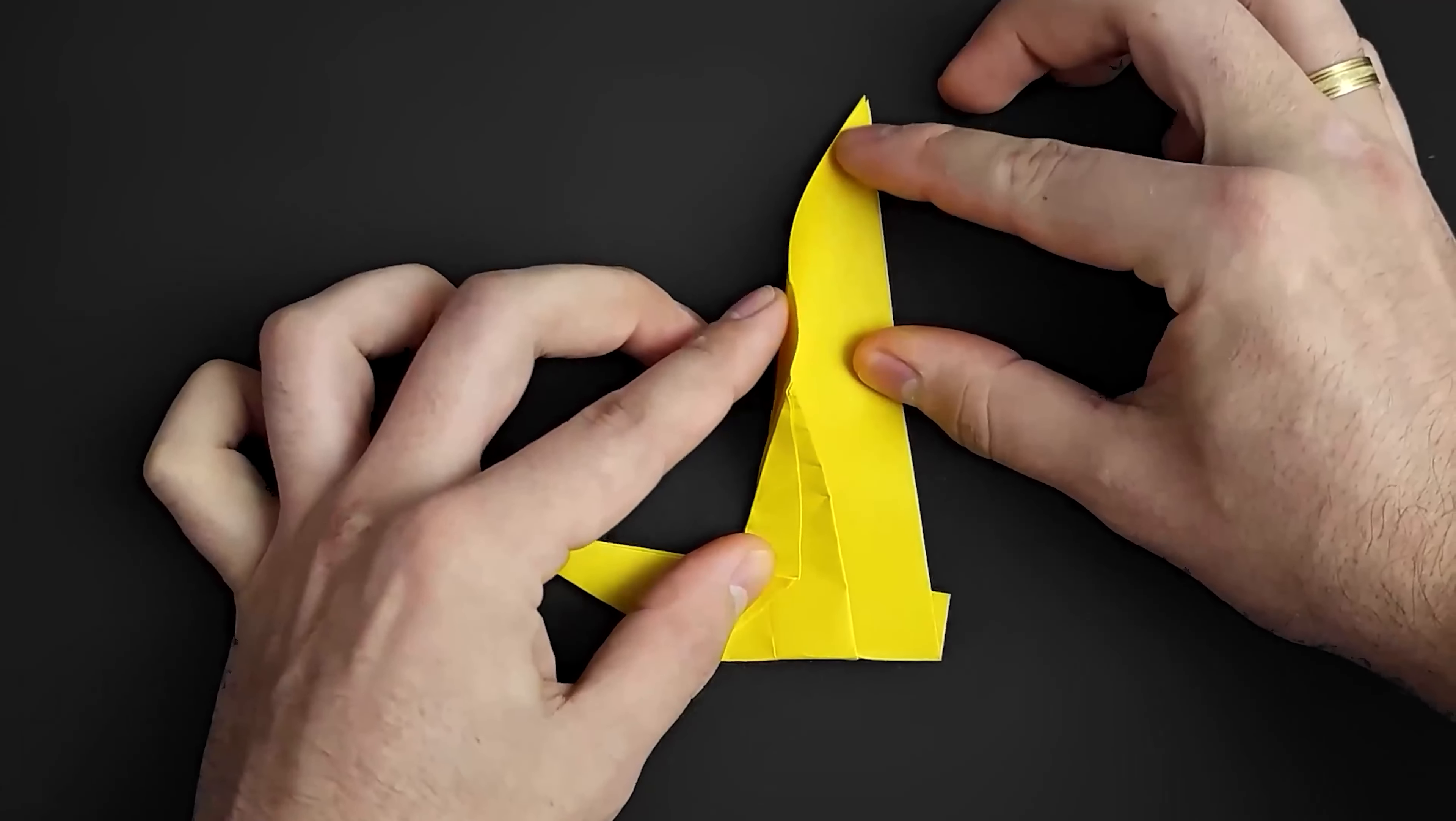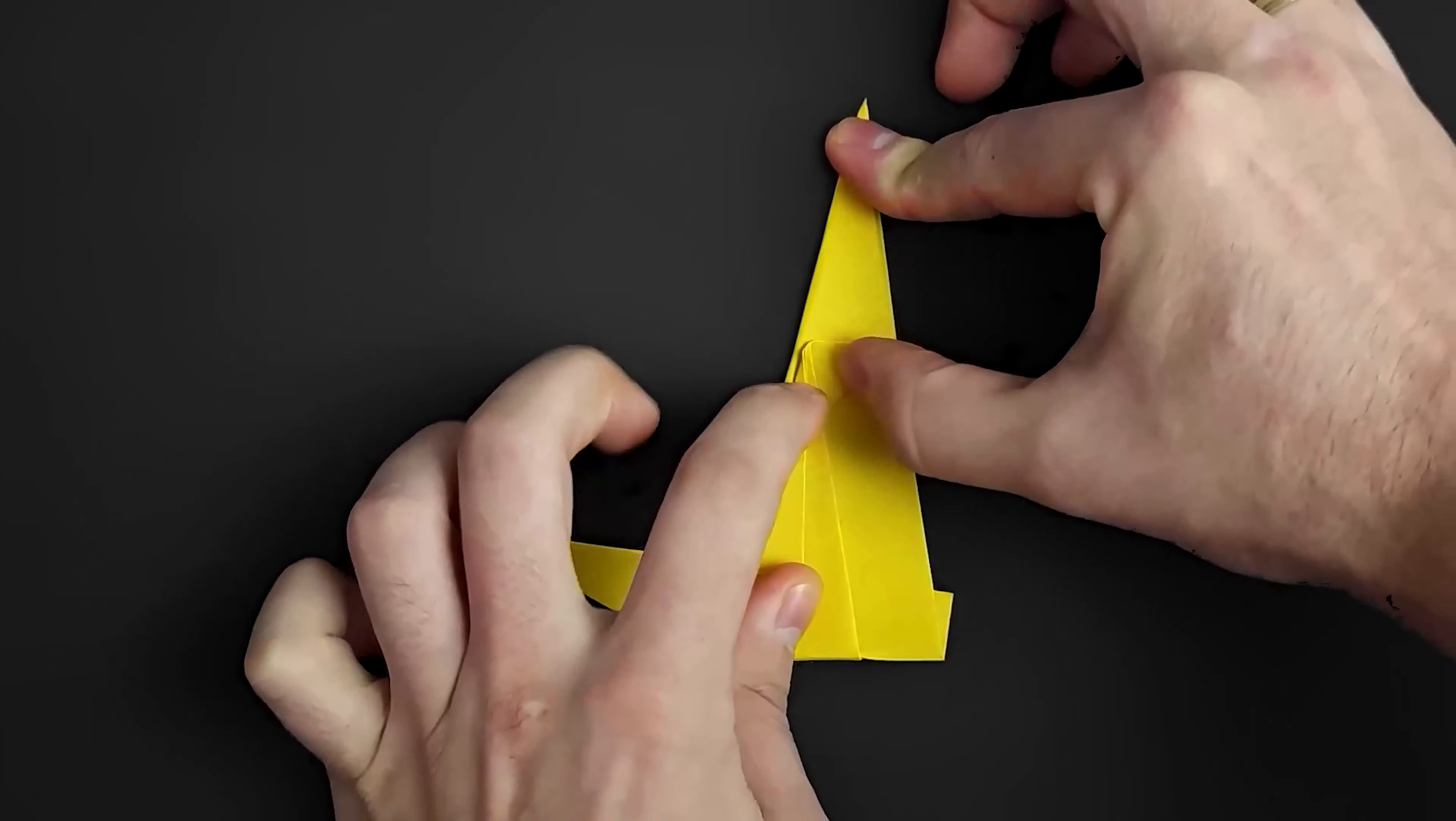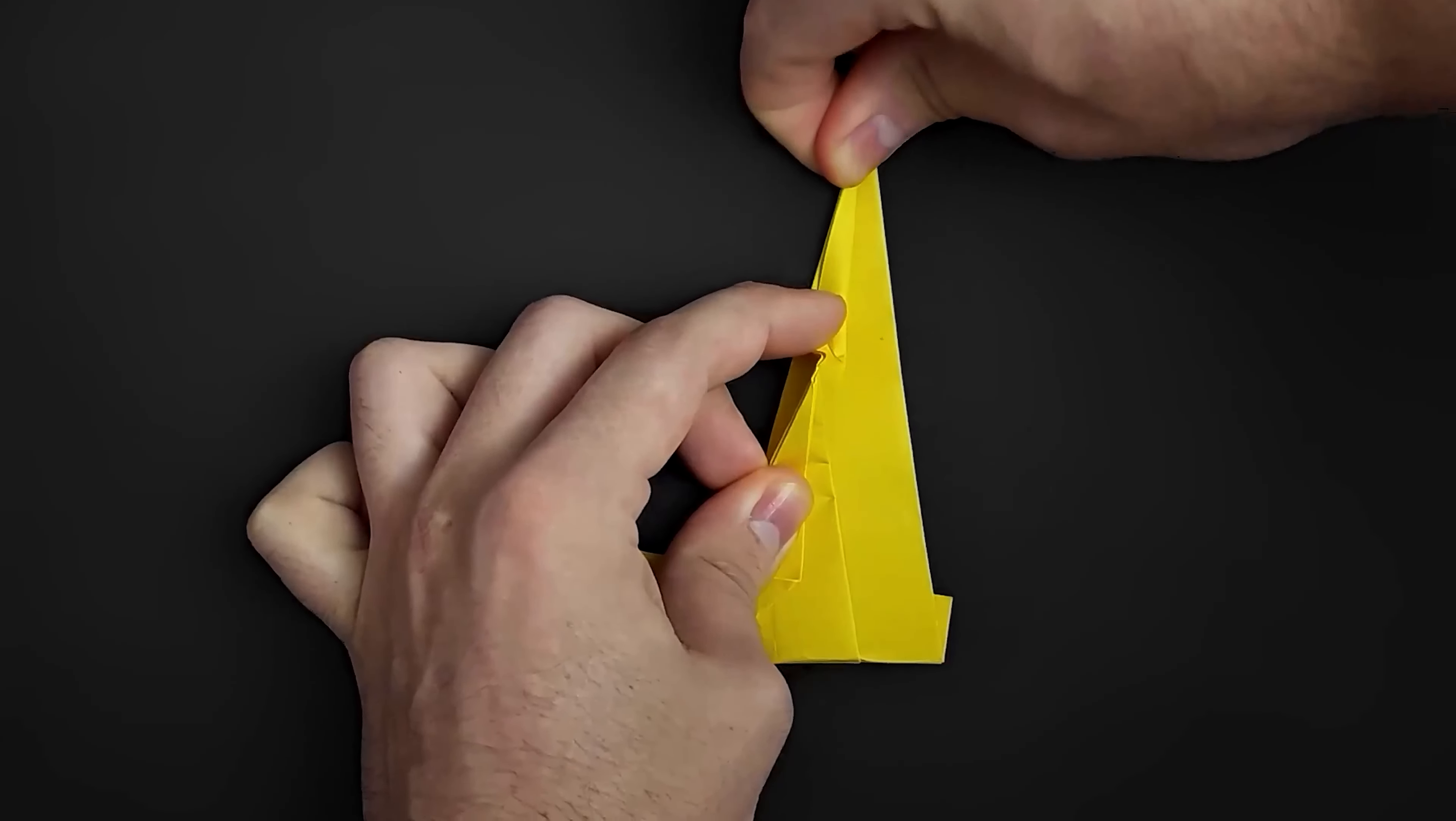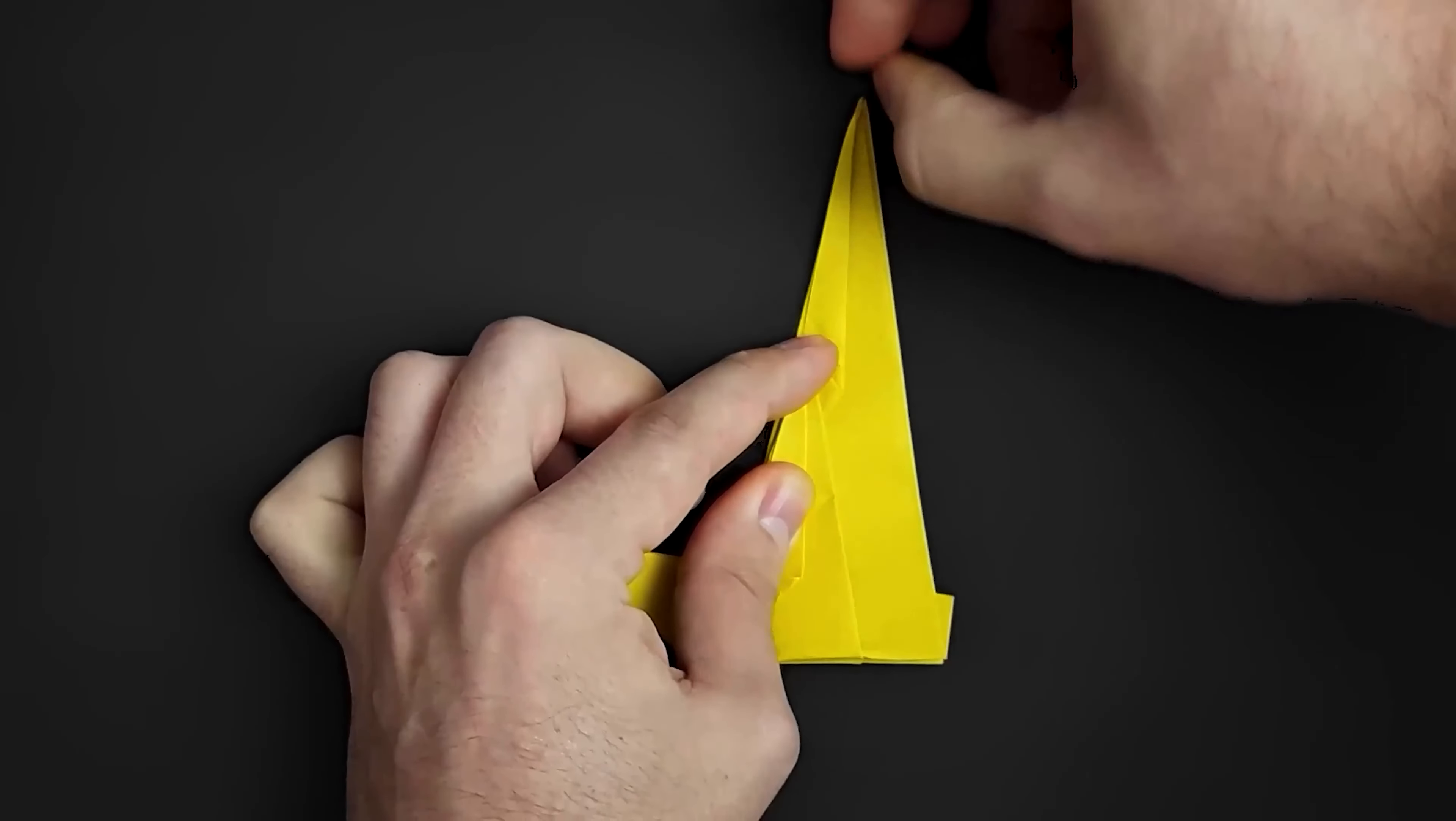Then fold the extra paper to the side too. And then fold back this part. We have the second wing.